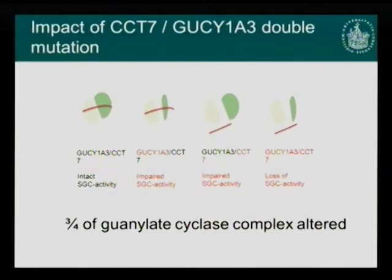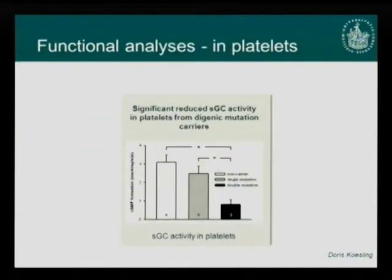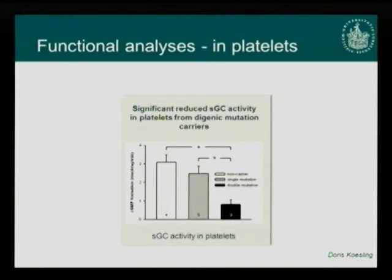Three quarters of the possible molecular combinations are altered: a single mutation carrier has 50% working complexes, while a double mutation carrier has only one quarter working. This is confirmed experimentally by measuring cGMP formation — the activity of soluble guanylate cyclase — showing a significant difference between double mutation carriers, single mutation carriers, and non-mutation carriers.